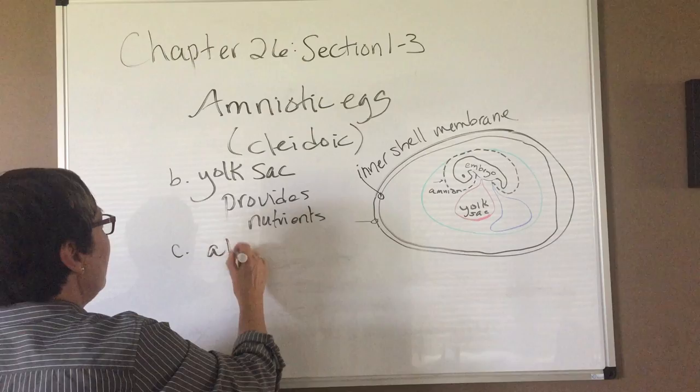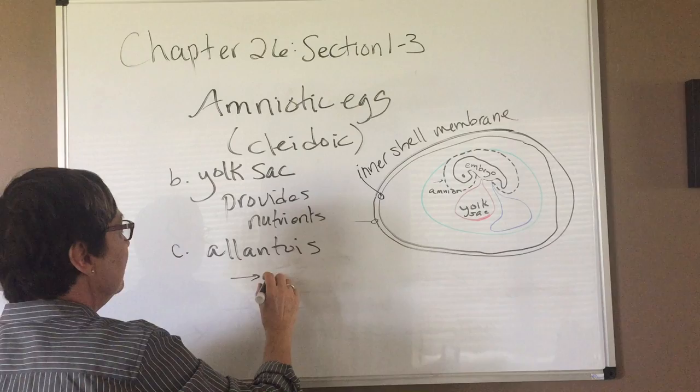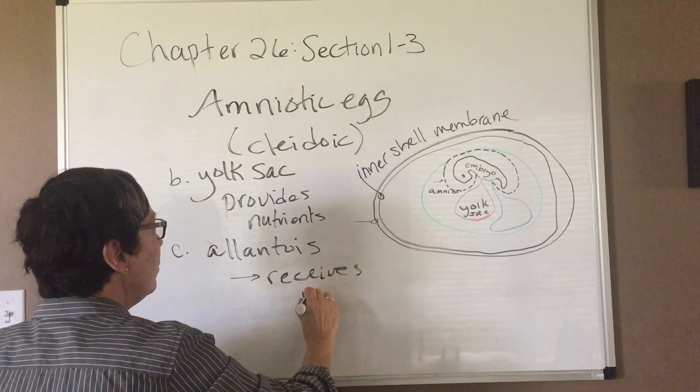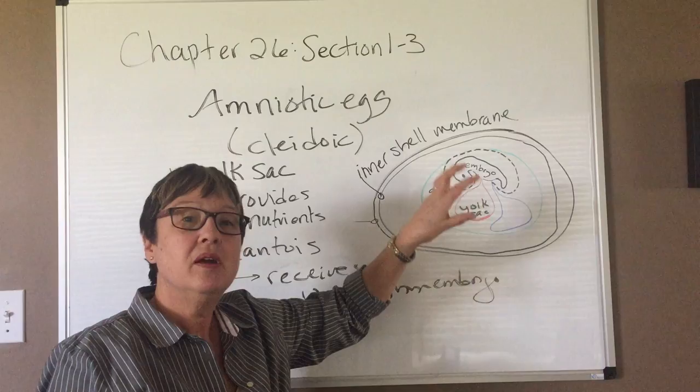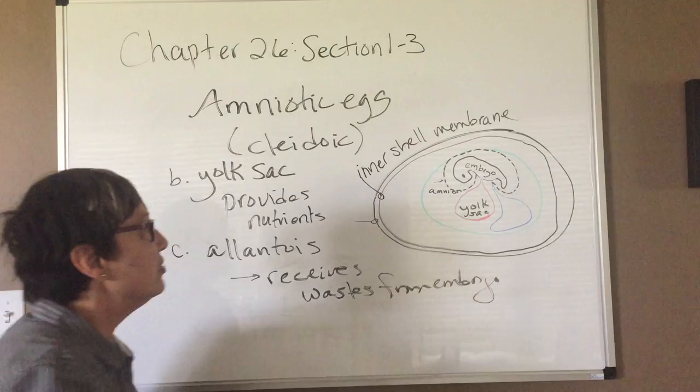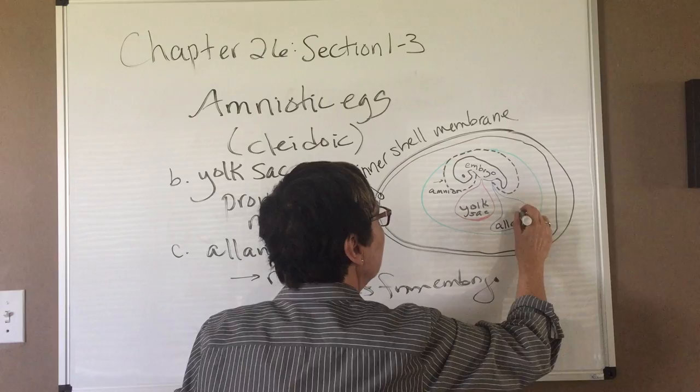The membrane next to it is called the allantois. And this is a sac that receives wastes from the embryo. So it's a way to sequester or keep any products—if they accumulate, they could be toxic to the embryo. So we keep them in a special sac. So this is the allantois.